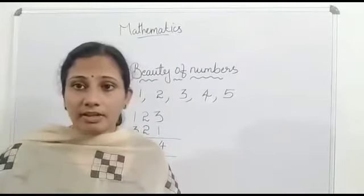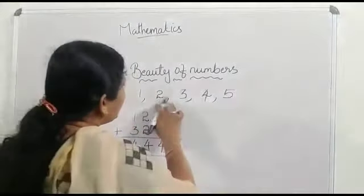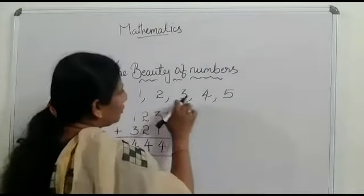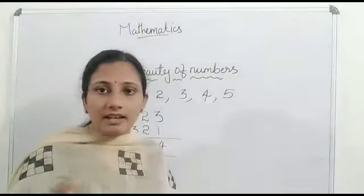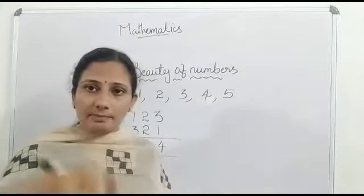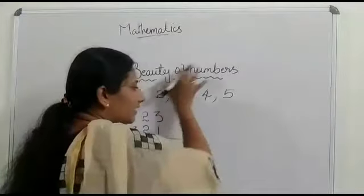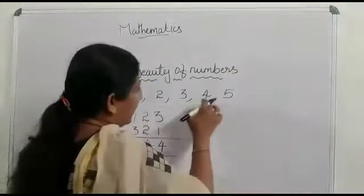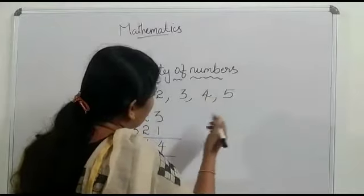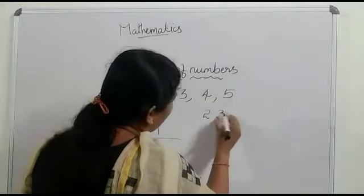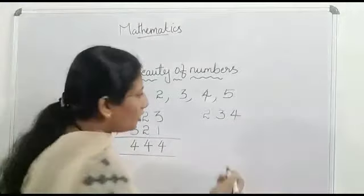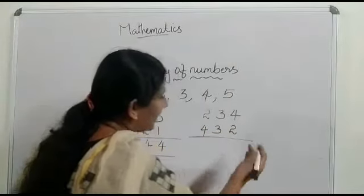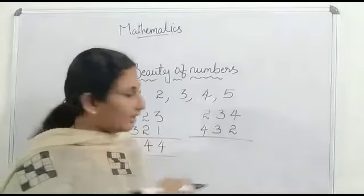Then let us take another digits 2, 3, 4. So using these digits we want to make a small number and big number. Next let us take 2, 3, 4. Which one is the smallest number? Yes. 234. Then largest number, this largest digit first right, then 3, 2. Then next step, let us find the sum of these two numbers.